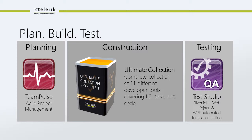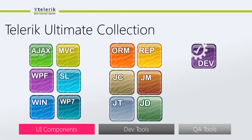In between these two bookends, we have our tools for software construction. The Telerik Ultimate Collection includes UI tools spanning most major Microsoft platforms: ASP.NET Ajax and ASP.NET MVC for the web platform, WPF and Silverlight for the XAML platform, Windows Phone 7 native tools, and RAD controls for WinForms. We also have Open Access ORM for data access needs and Telerik Reporting for all your reporting needs.